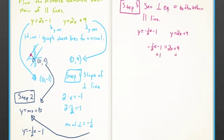So the other equation I haven't used is 2x + 9. Therefore, I set -1/2x - 1 equal to 2x + 9, and I find that x equals -4.